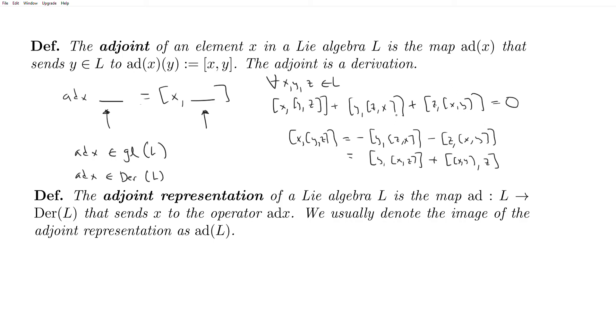And now, if I define, if I change my notation, I'm not actually redefining anything. If I say that A dot B is equal to A bracket B, then what we have on the left-hand side is ad(X) applied to Y dot Z is equal to Y dot ad(X) applied to Z plus ad(X) applied to Y dot Z. And so now it's clear that this is a derivation.